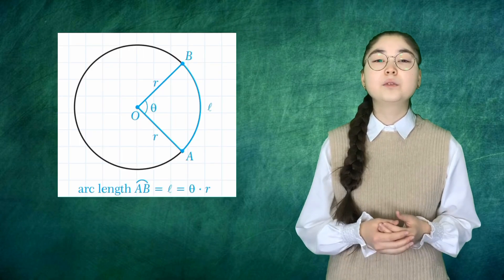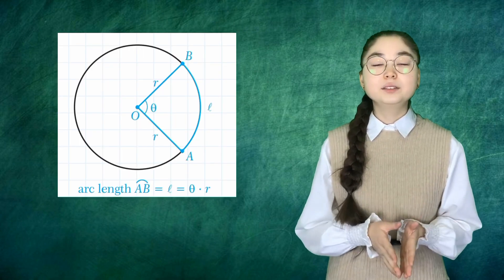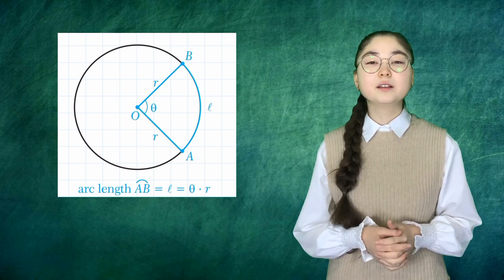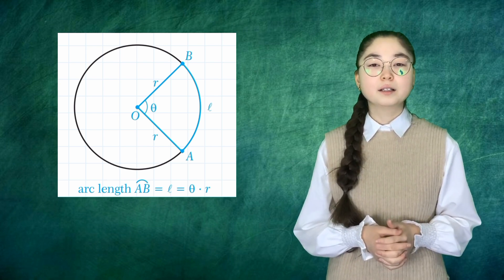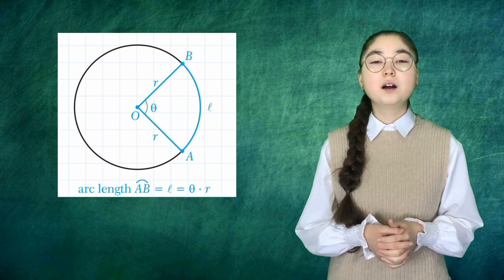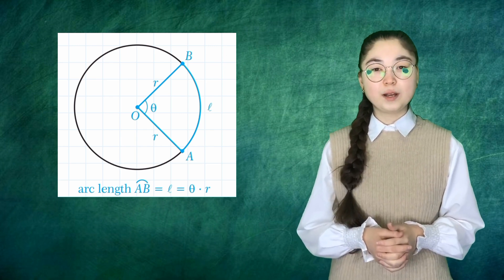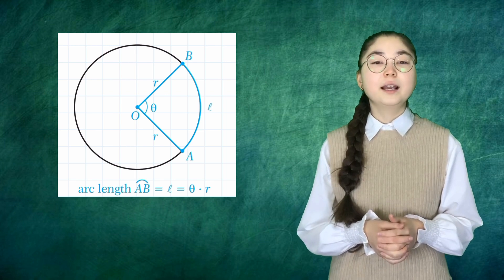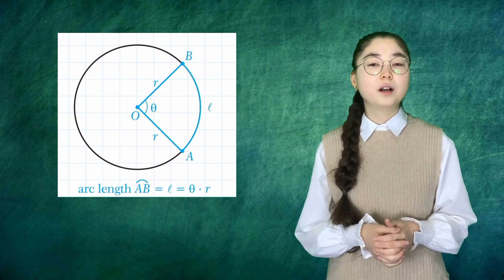The radian measure gives us an easy correspondence between the length of an arc, the radius r of its circle, and the measure of the central angle corresponding to the arc. If the arc length is r, the angle measure is 1 radian. If the arc length is l, the angle measure is l over r radians.